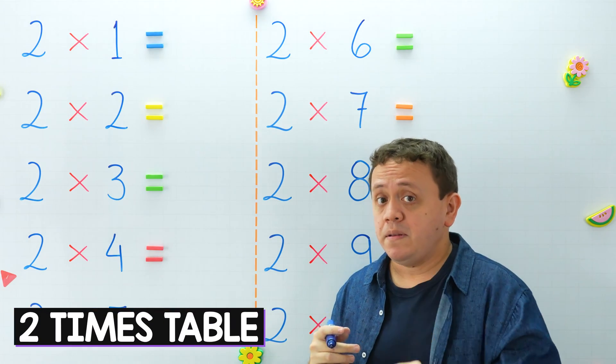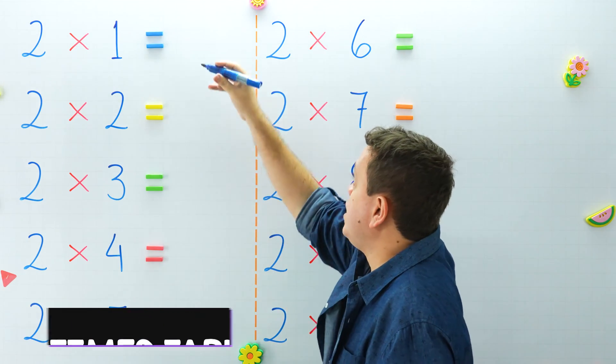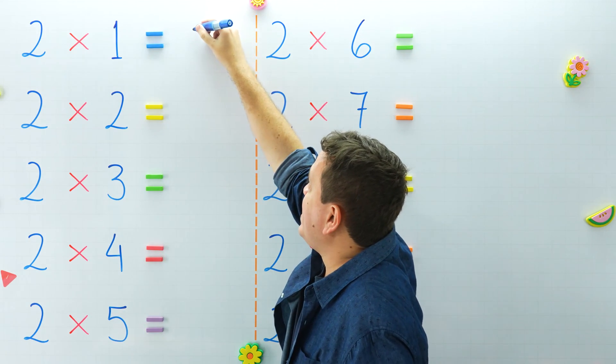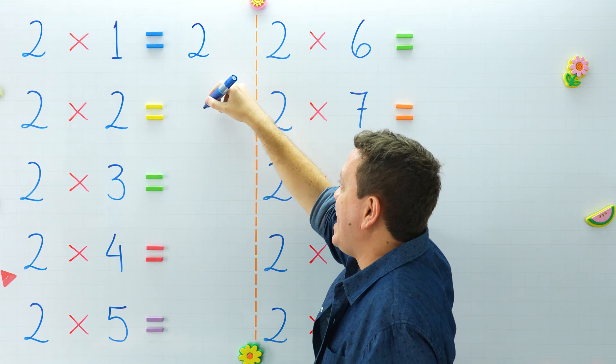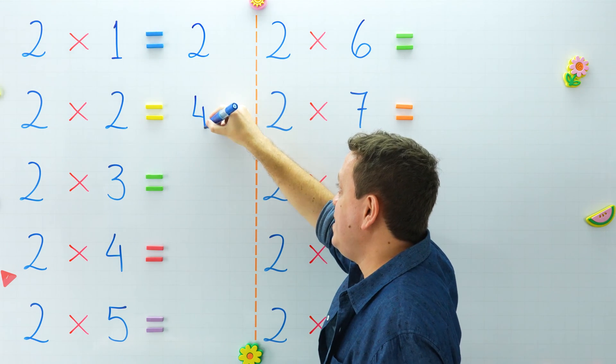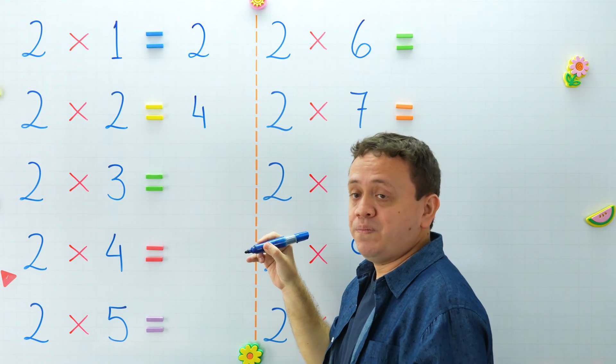Now, the 2 times table — pay attention. 2 times 1 equals 2, and 2 times 2 equals 4.